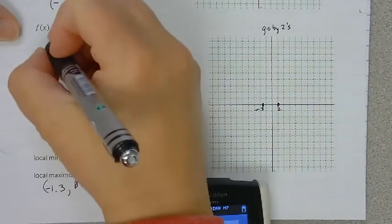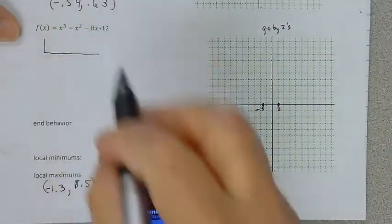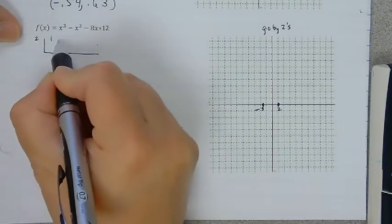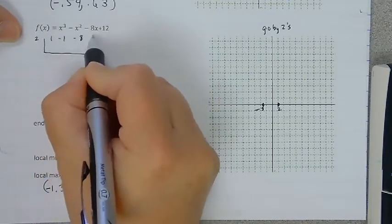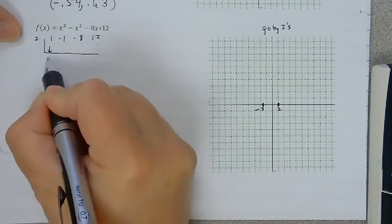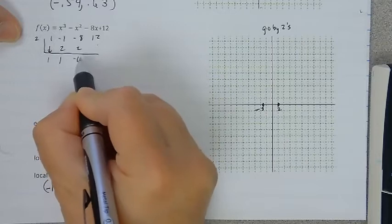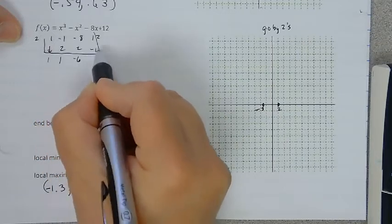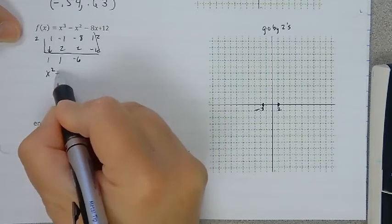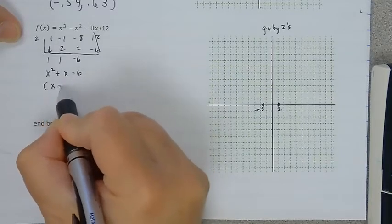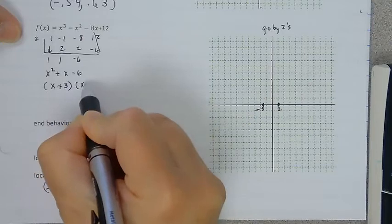So I'm going to do synthetic division and try those numbers just to make sure I have 2. Even though we can see them on our calculator, on the test I'm going to make you show me that they actually work. So yep, that works. And then this would factor to x squared plus x minus 6, which would be x plus 3 times x minus 2.